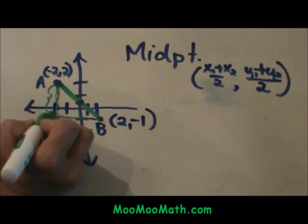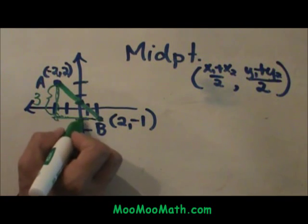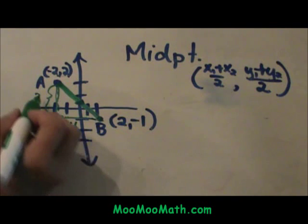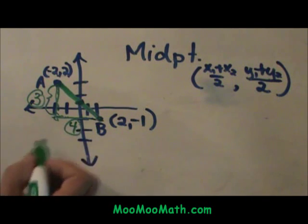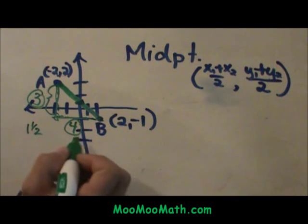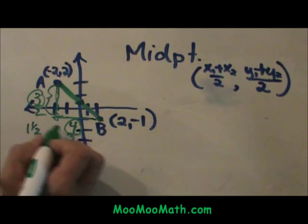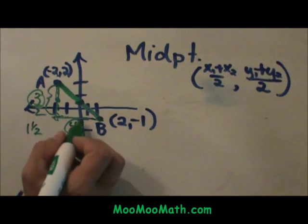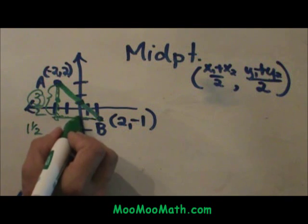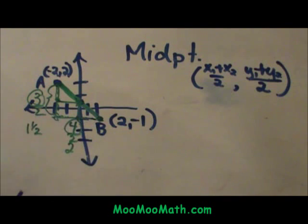This side over here is three units. This side is four units. I am going to take half of each side so half of three is one and a half and half of four is two. So I take half of each side and I go one and a half here and two here. Then I see where those two meet and that gives me my midpoint.